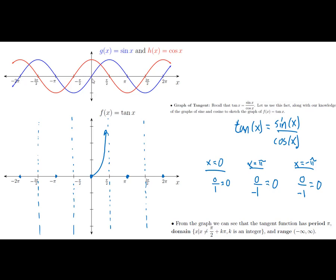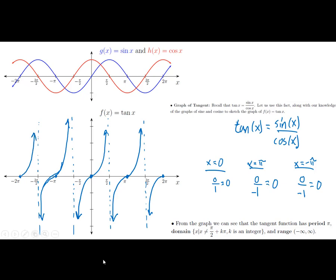Between π/2 and π, we have sine positive and cosine negative, giving a negative tangent. Between π and 3π/2, both are negative, giving a positive tangent. The tangent function repeats itself every π, so it has a period of π — not 2π.